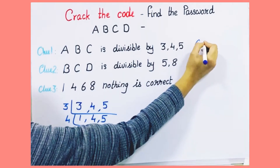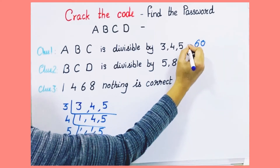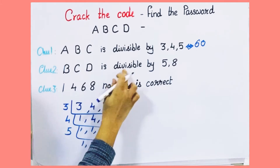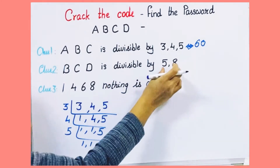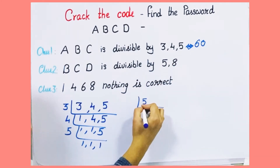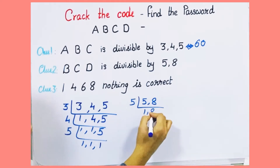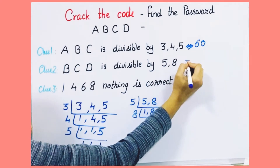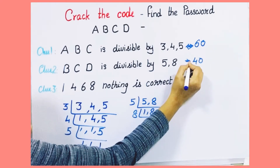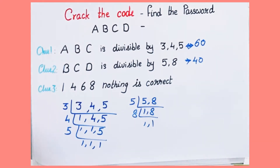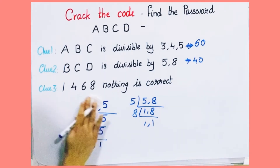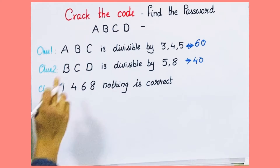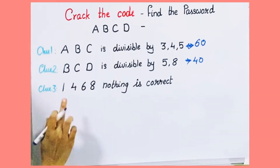So ABC is a multiple of 60. The next clue says that BCD is a number divisible by 5 and 8, so take the LCM of 5 and 8, which is 40. The third clue says that digits 1, 4, 6, and 8 are incorrect — they will not appear in ABCD.